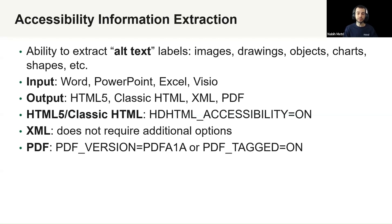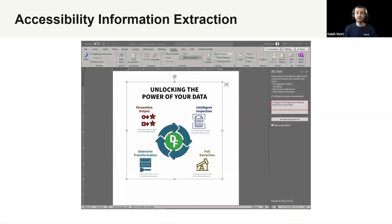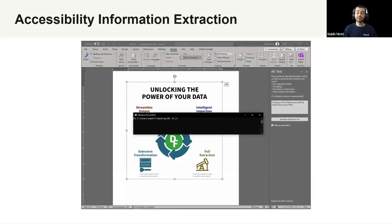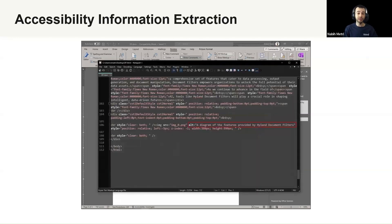The key thing to remember is that the output file needs to have accessibility enabled. For HTML, that means the HTML accessibility option is set to on. For PDF, the PDF version needs to be set to PDF/A-1A, or the PDF tagged option needs to be set to on. Here we have an image in a Word document that contains alt text. We run it through doc2text and convert it to an HTML file, and we can see that it added the alt tag with our alt text.